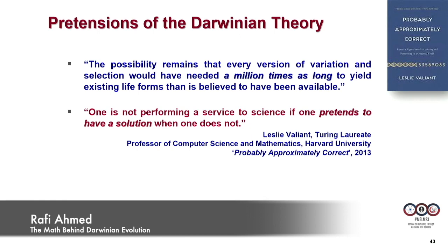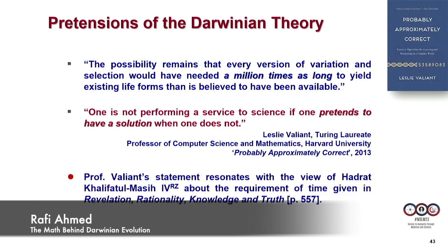This point is made in a book by Leslie Valiant, a Turing laureate — the highest award in computer science, the Nobel Prize of computing. He is underestimating the time, but still concludes it will take a million times as long. He goes on to say something very interesting: one is not performing a service to science if one pretends to have a solution when one does not — referring directly to the neo-Darwinian theory of evolution. This echoes Hazrat Khalifatul Masih IV's statement in the book Revelation, Rationality, Knowledge and Truth, about the requirement of time.